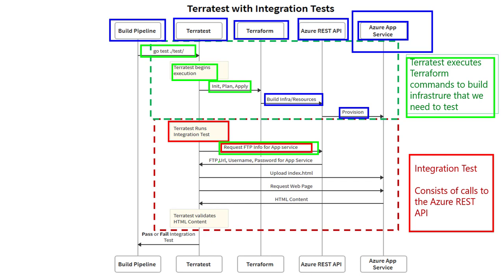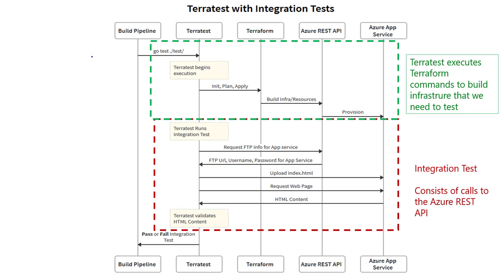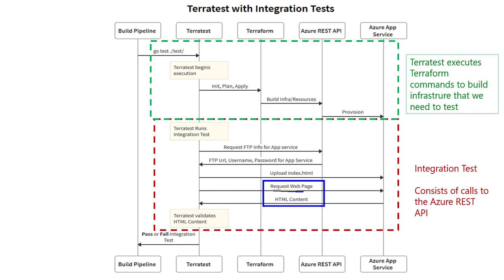What we want to do is upload an index HTML document. To do that, we're going to need some endpoint information about the FTP endpoint, along with the username and password. Once we get that back, we can go ahead and use it to upload index.html. Once all that is complete, we're ready to do the real test — we're going to request a web page and test its content to see if it has the magic string.